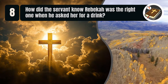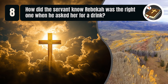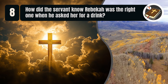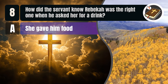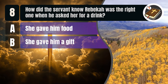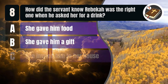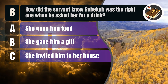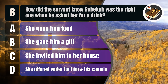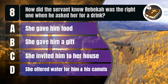Question 8. How did the servant know Rebekah was the right one when he asked her for a drink? A. She gave him food. B. She gave him a gift. C. She invited him to her house. D. She offered water for him and his camels.